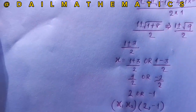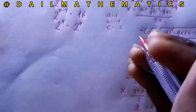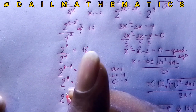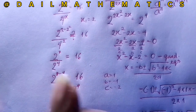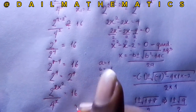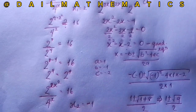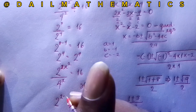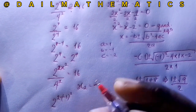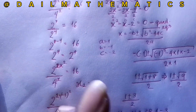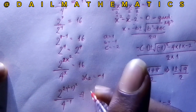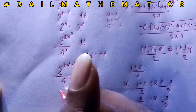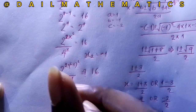Now checking x₂ equals −1 in the original equation: 2 raised to the power of 2 times (−1) squared, over 4 raised to the power of −1. Since (−1) squared is 1, and 1 times 2 is 2, the numerator is 2 raised to the power of 2, which equals 4.